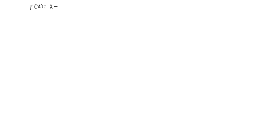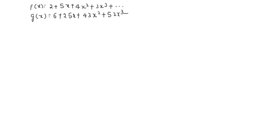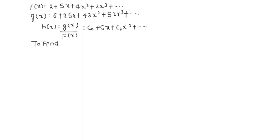In this question we have been given the power series of two functions. f(x) has the power series 2 + 5x + 4x² + 3x³ + ... whereas g(x) has the power series 6 + 25x + 43x² + 52x³ + ... We have to find the coefficients when we divide these two, where h(x) = g(x)/f(x) = c₀ + c₁x + c₂x² + c₃x³ + ... We need to find c₀, c₁, c₂, and c₃.